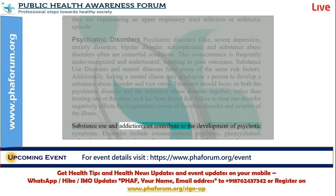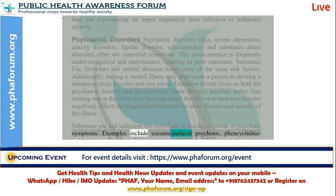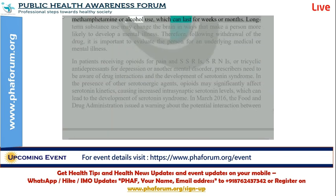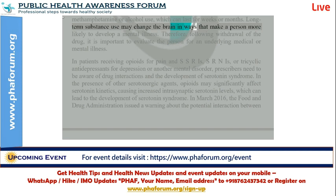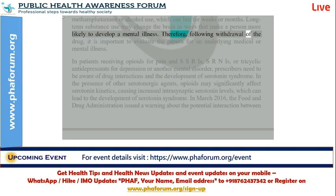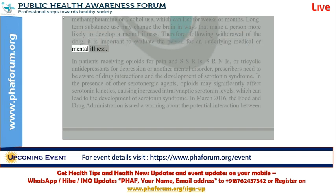Substance use and addiction can contribute to the development of psychotic symptoms. Examples include cocaine-induced psychosis, phencyclidine-induced psychosis, and psychosis induced by heavy or long-term methamphetamine or alcohol use, which can last for weeks or months. Long-term substance use may change the brain in ways that make a person more likely to develop a mental illness. Therefore, following withdrawal of the drug, it is important to evaluate the person for an underlying medical or mental illness.